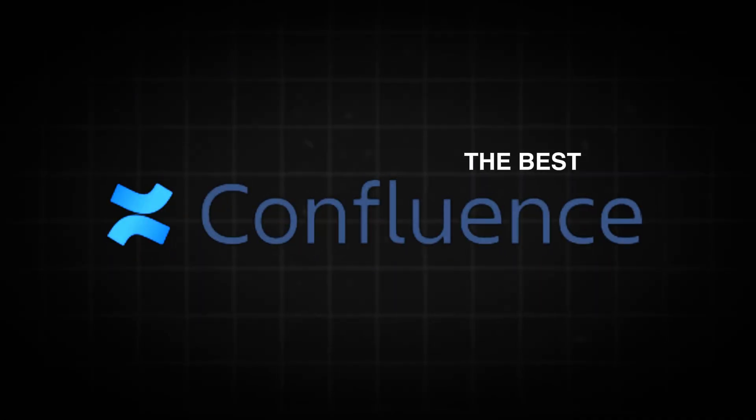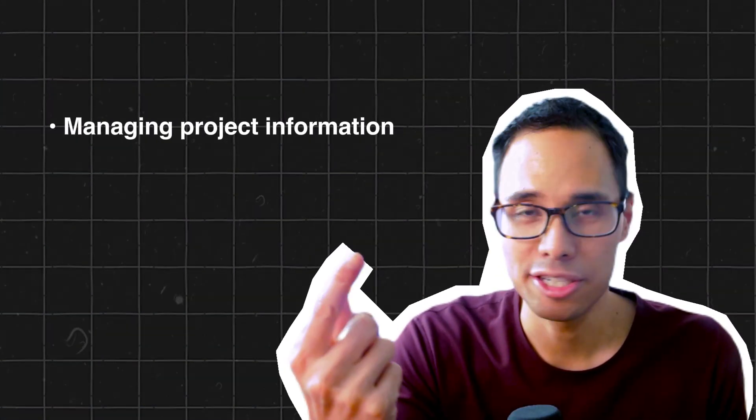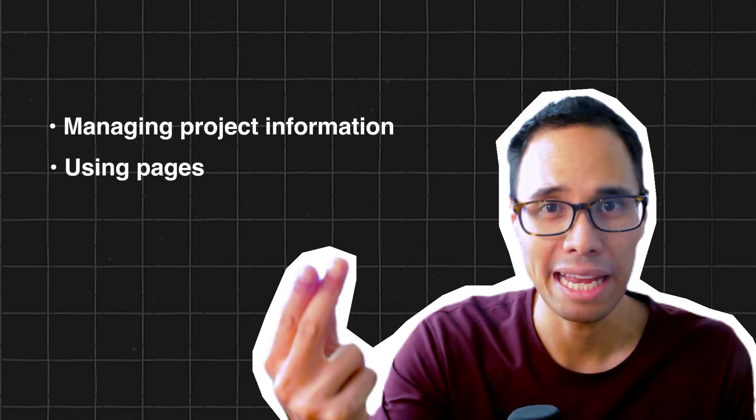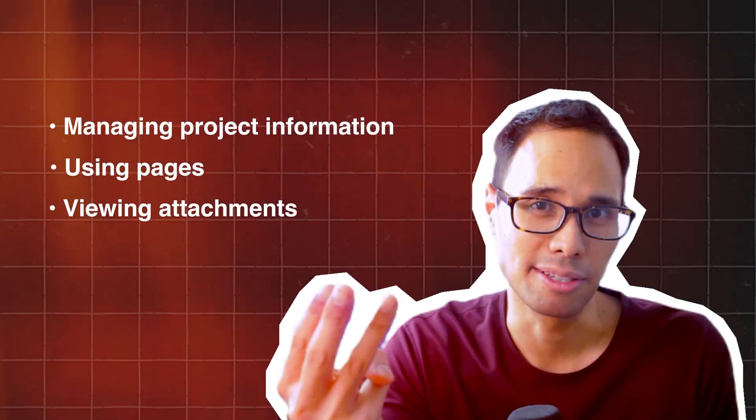These are the best Confluence handy macros to use whenever you're managing projects and collaborating with your team. We'll divide these macros into three categories: managing project information, using pages, and viewing attachments.